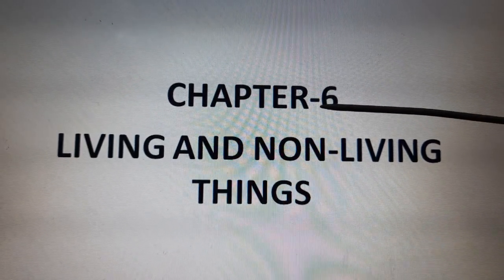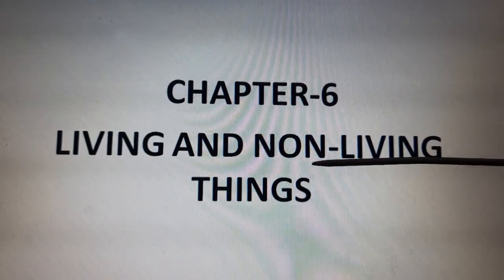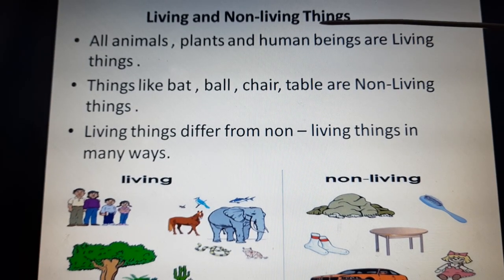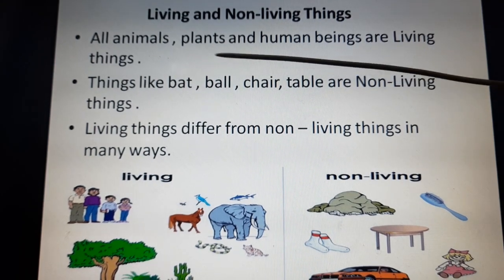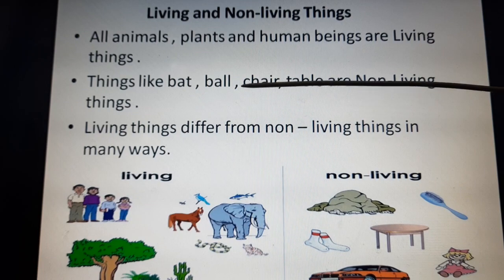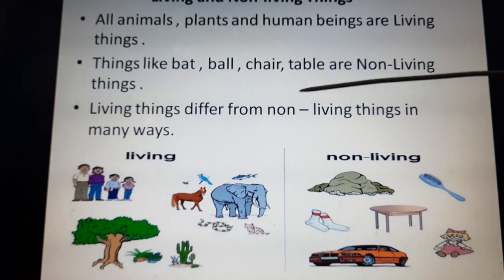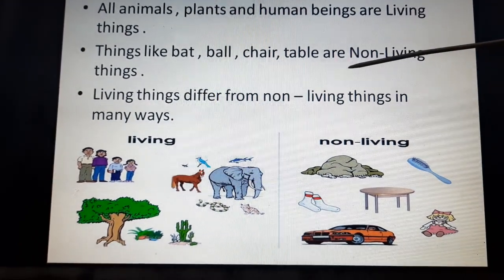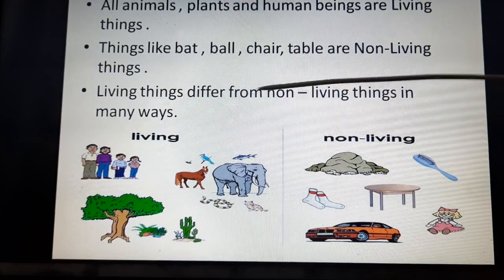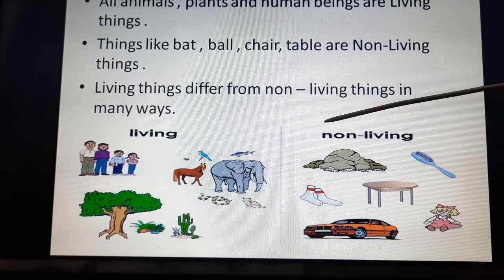Good morning children. Today we are going to take chapter 6: living and non-living things. All animals, plants and human beings are living things, but things like a bat, ball, chair, table, your laptop, your telephone are non-living things. Living things are different from non-living things in many ways, and we are going to learn about that.